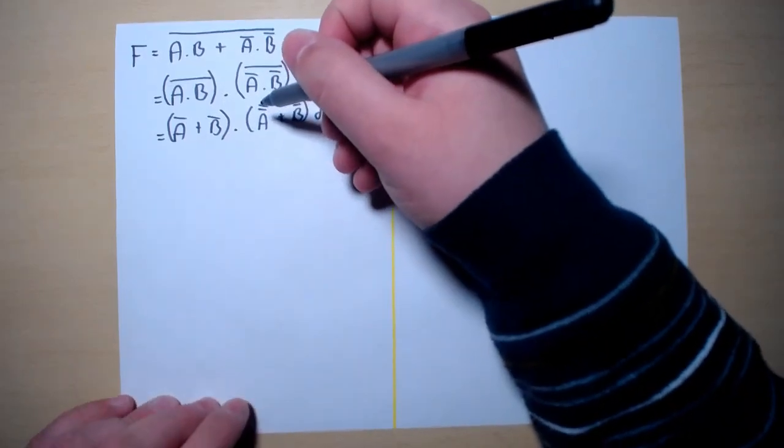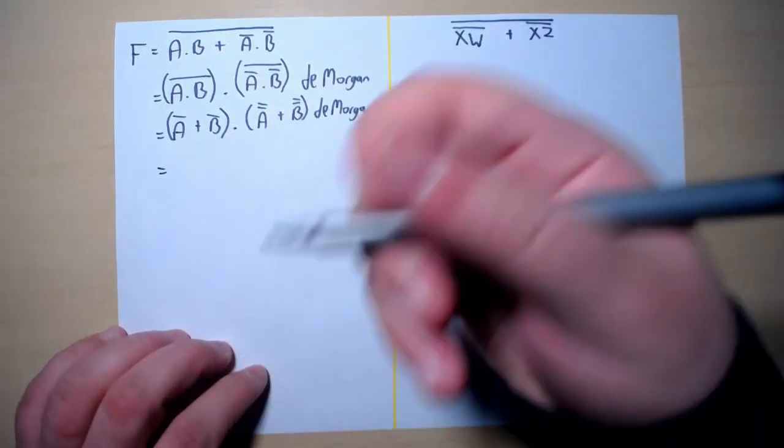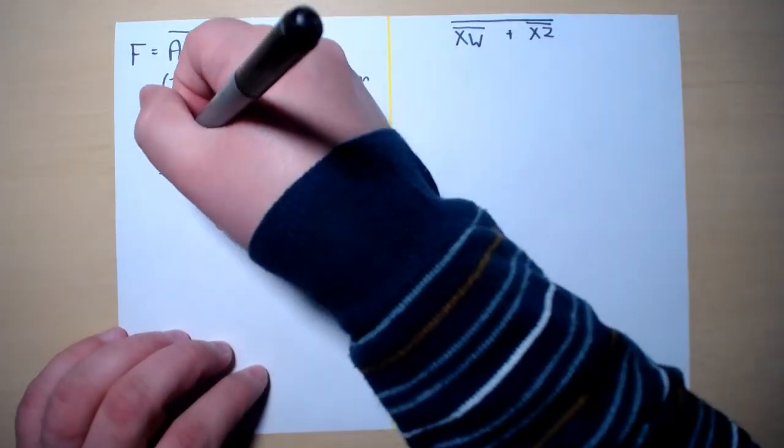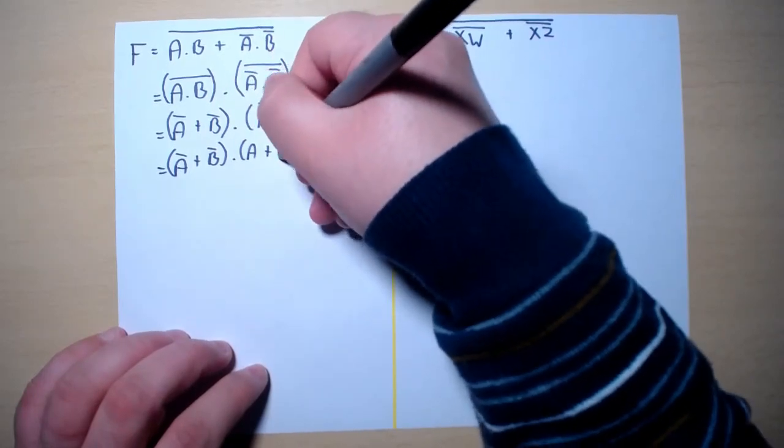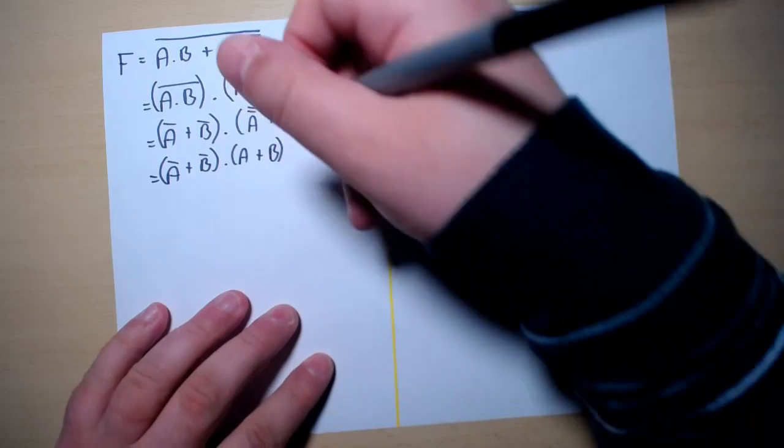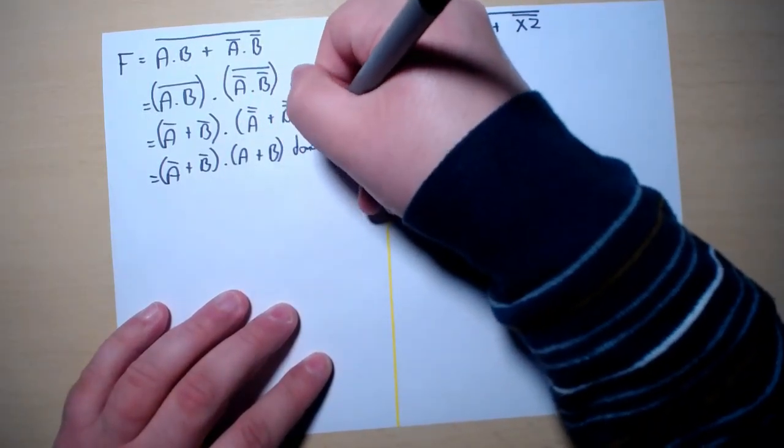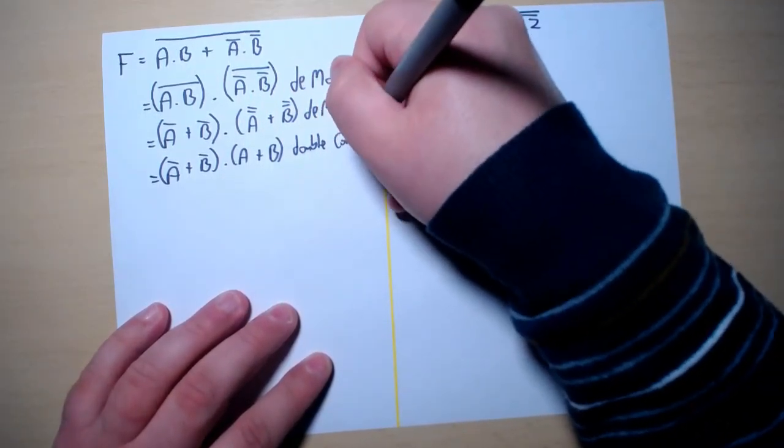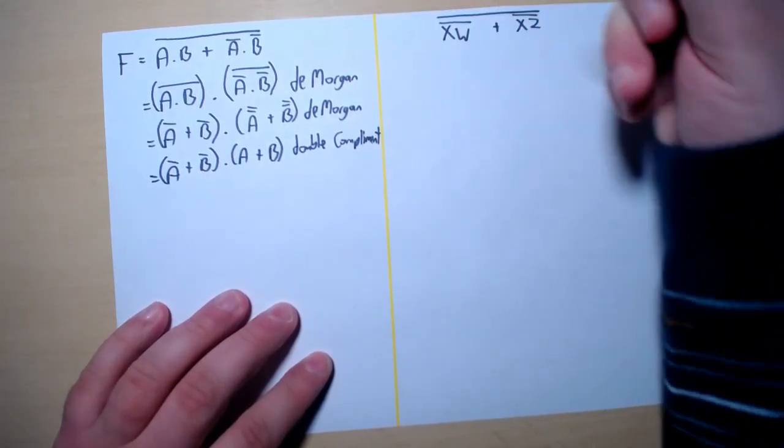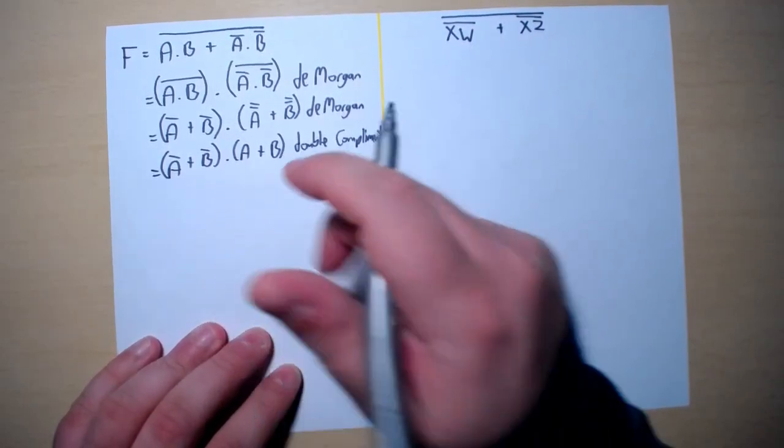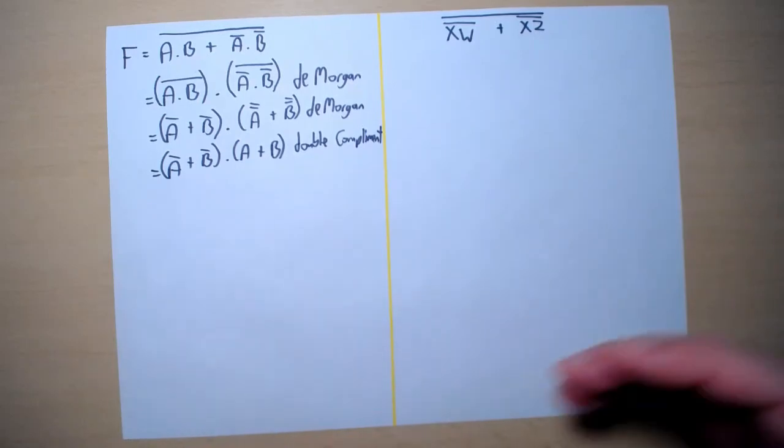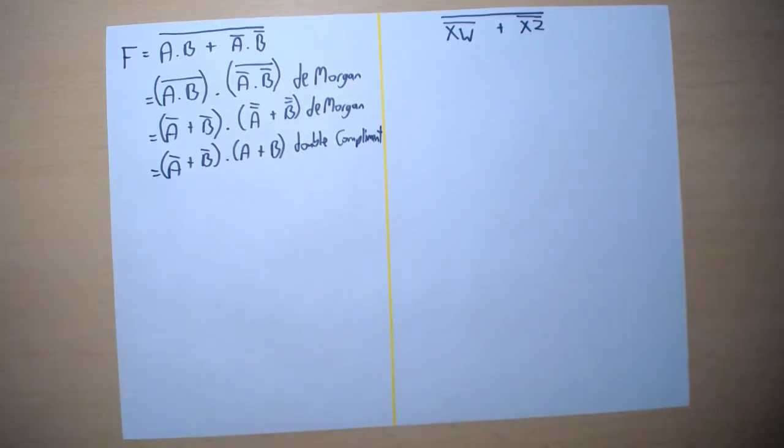Because when we have NOT and NOT they will cancel each other. So using the double complement law we will get A naught or B naught into A or B. Now these two brackets can't be further simplified as they are, so let's try to expand the brackets and see whether we can minimize them further.